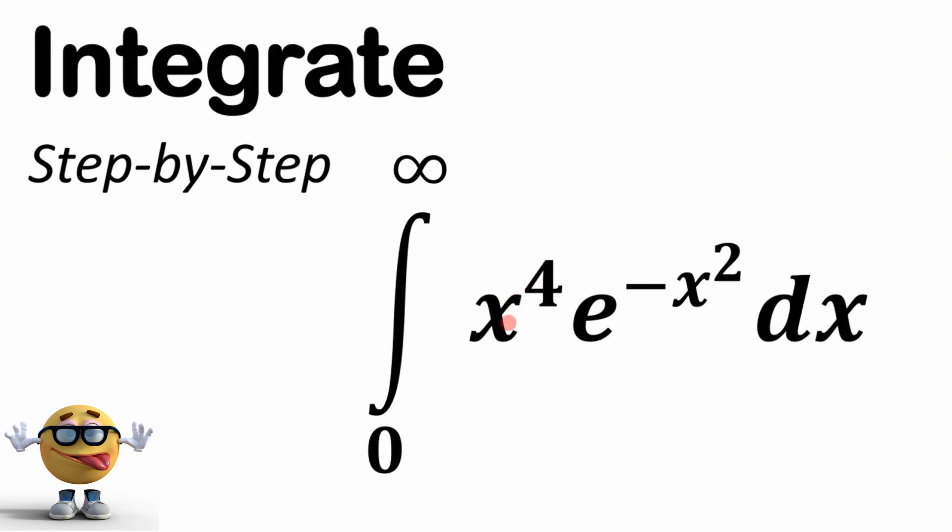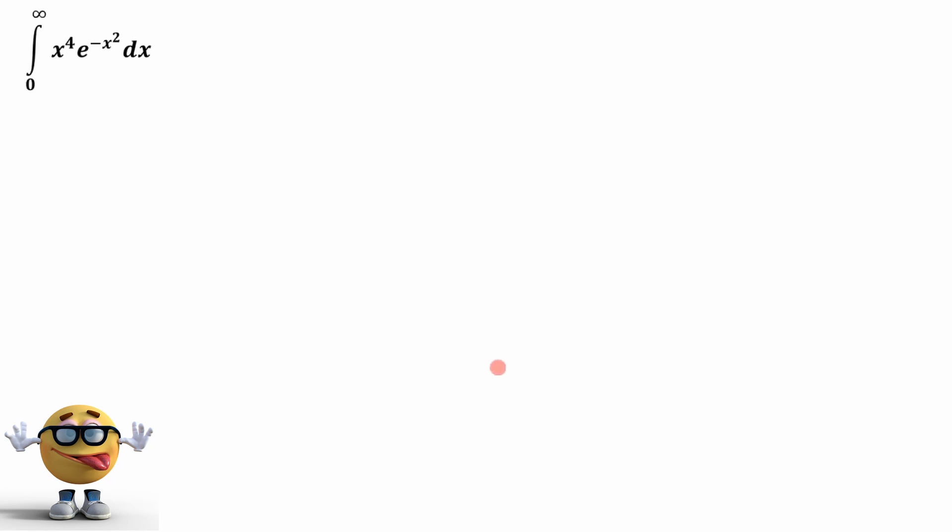My friends, we're going to evaluate the integral of x to the fourth times e to the negative x squared from zero to infinity. This is a long integral, but we're going to do it very quickly, and I hope you appreciate it. It's going to be awesome. Just note I got many modifications of this integral as well.